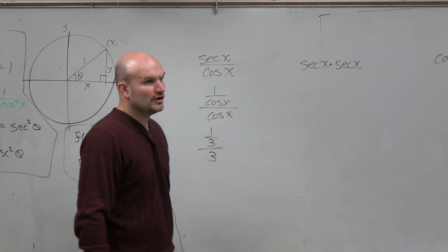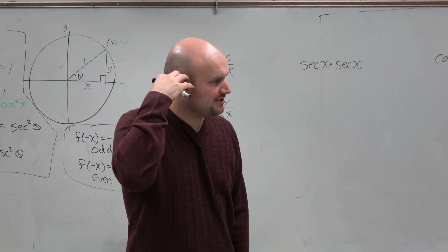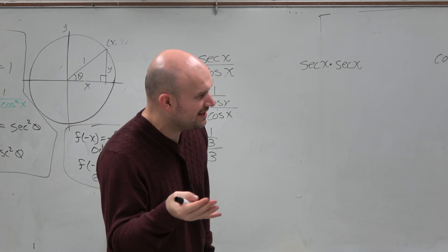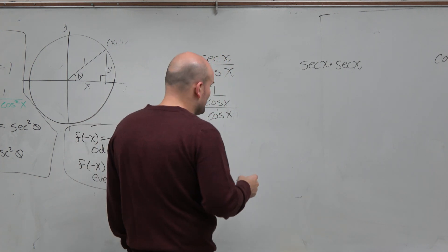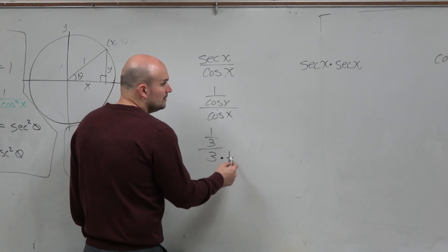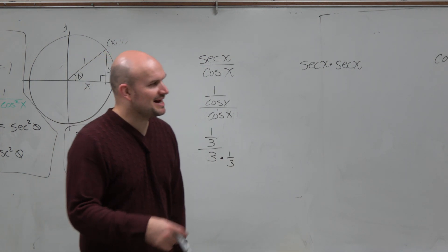If I had 1 third divided by 3, and I thought, well, how am I going to do that? Or how would I simplify that? What I'd like to do is multiply by the reciprocal, which is 1 third from the top and the bottom.